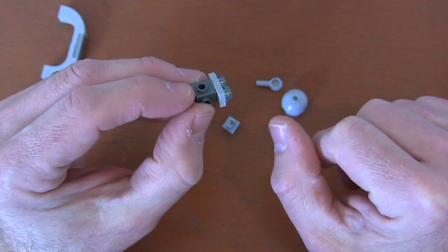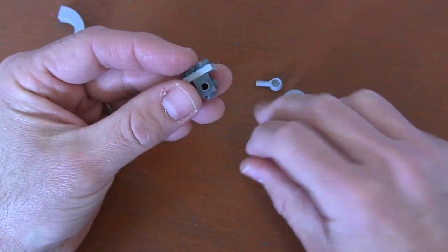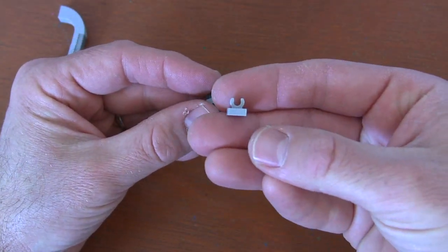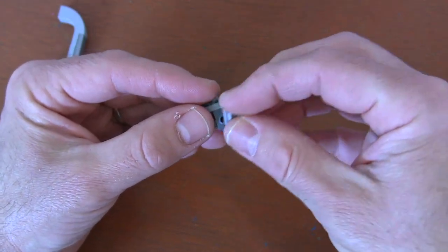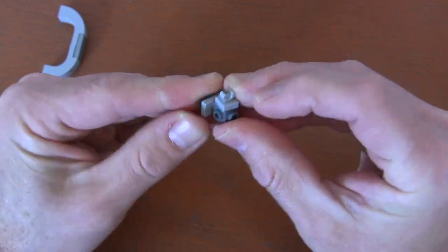Now on the top stud here, we're going to get a one by one tile piece with the clip. The reason we have this tile piece with the clip is it kind of creates that city that's on top and in the back of this command ship. So we put that on to create the effect of those towers.